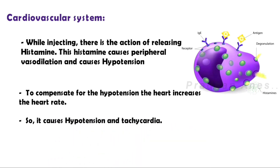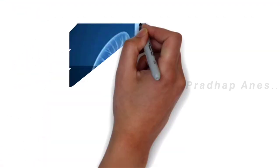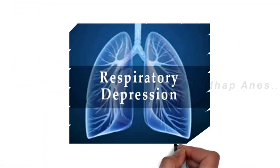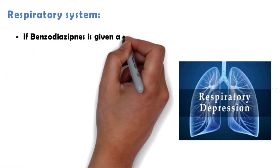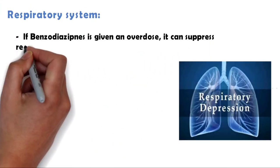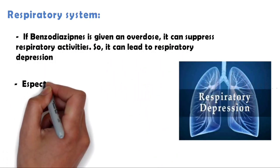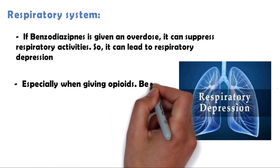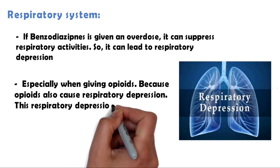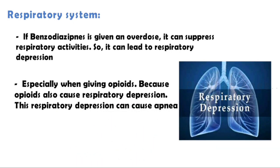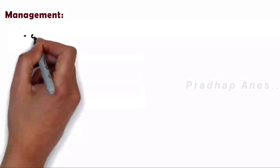Respiratory system: Benzodiazepines cause respiratory depression and hypotension. If benzodiazepines is given in overdose it can suppress respiratory activities so it can lead to respiratory depression, especially when giving opioids because opioids also cause respiratory depression. This respiratory depression can cause apnea.